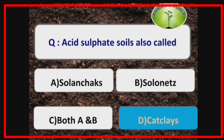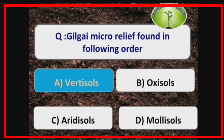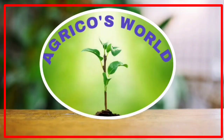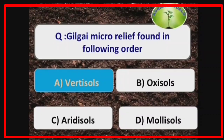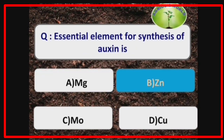Acid sulphate soils are also called cat clays because of their shiny nature. Gilgai micro-relief is found in vertisols.